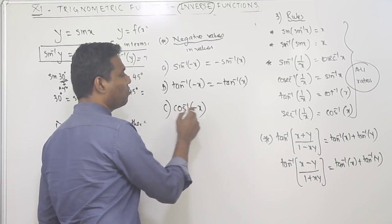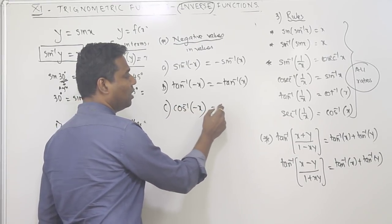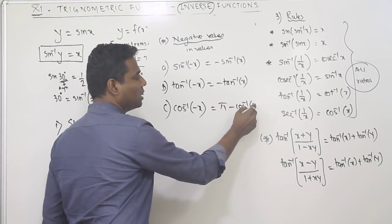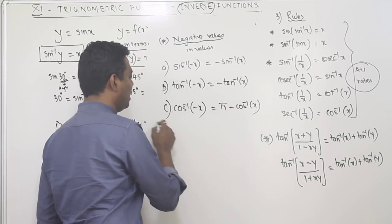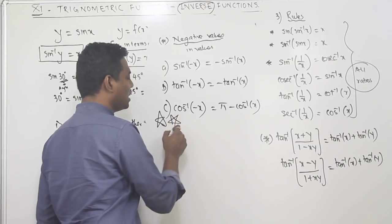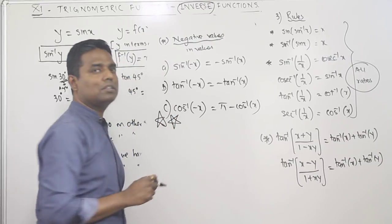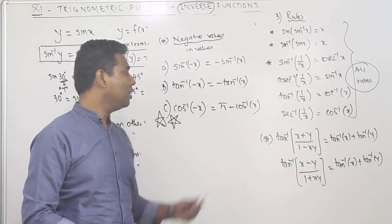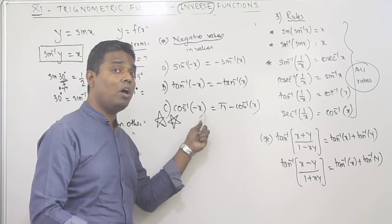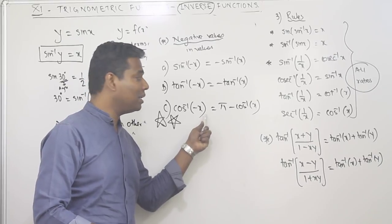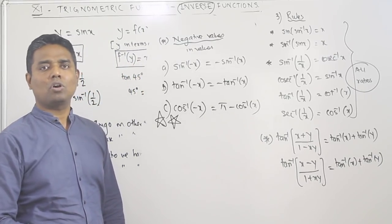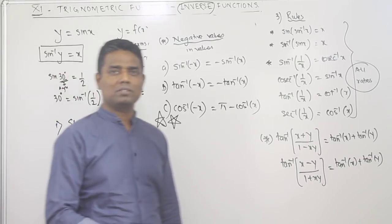However, in the cosine case it is different. Cos inverse of minus x is equal to pi minus cos inverse x. This is not the same as the negative angle formula for cosine — it is different.